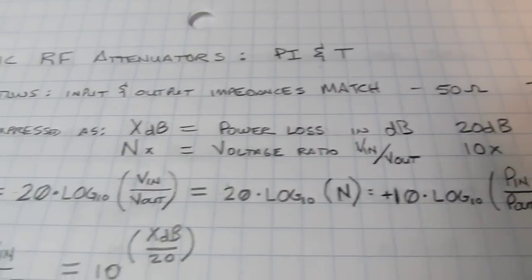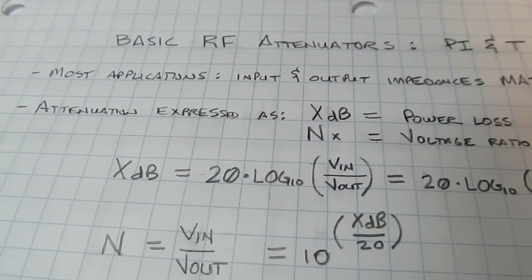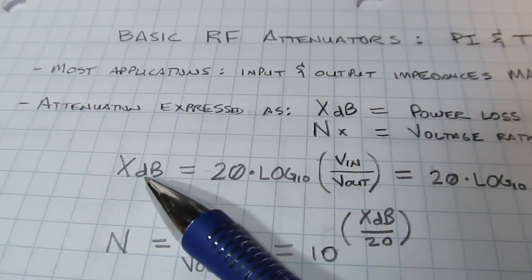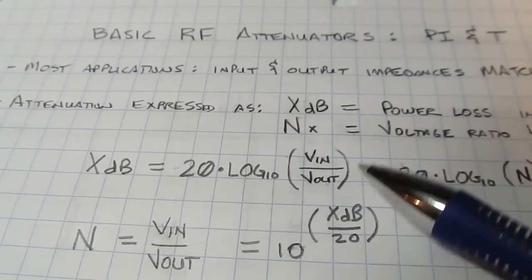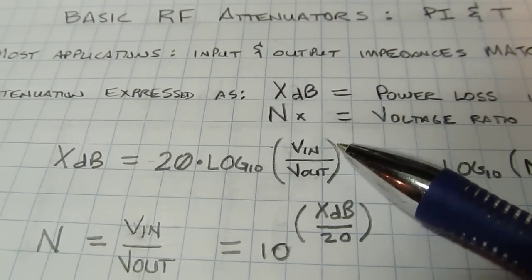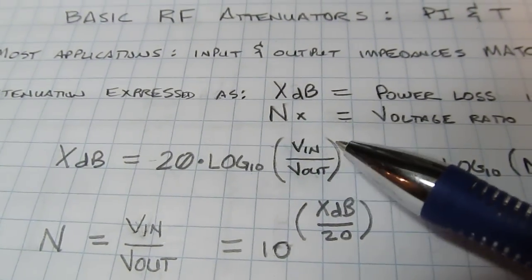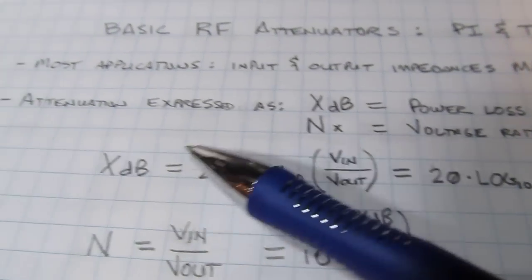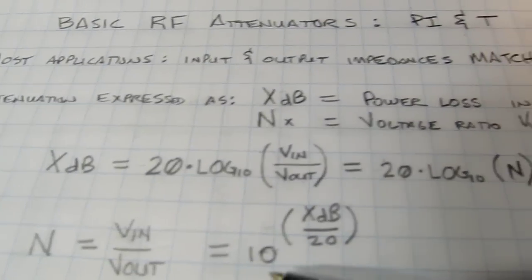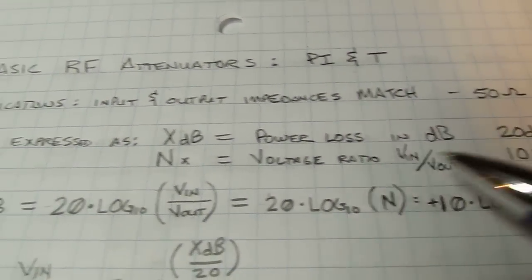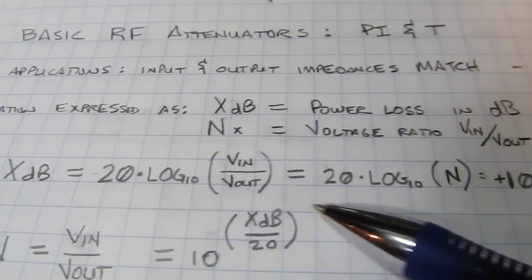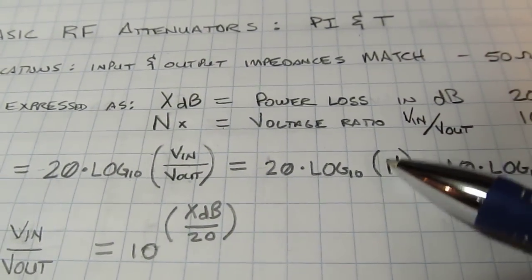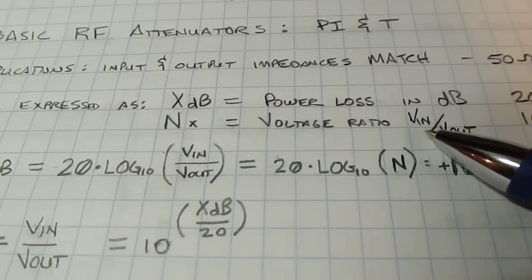The relationship is simply these equations. The dB value is equal to 20 times the log of Vin over Vout. We're talking about a loss, so these would typically be inverted and that would be a negative value, but when we talk about an attenuator we say it's 20 dB so we have it come out as a positive number. That's the same thing as saying 20 times the log of N, where N equals the voltage ratio Vin to Vout.